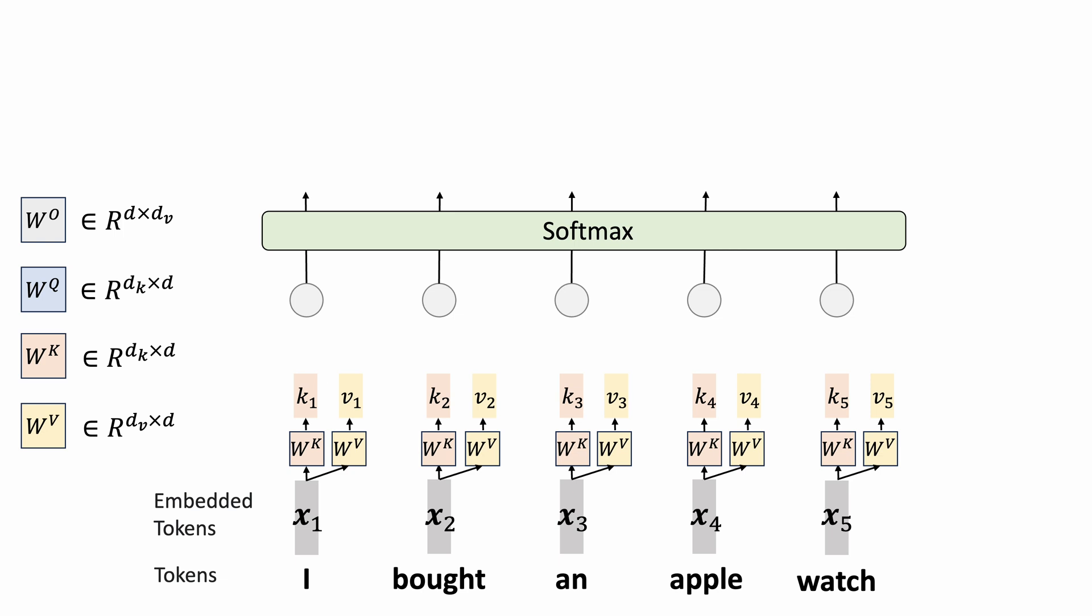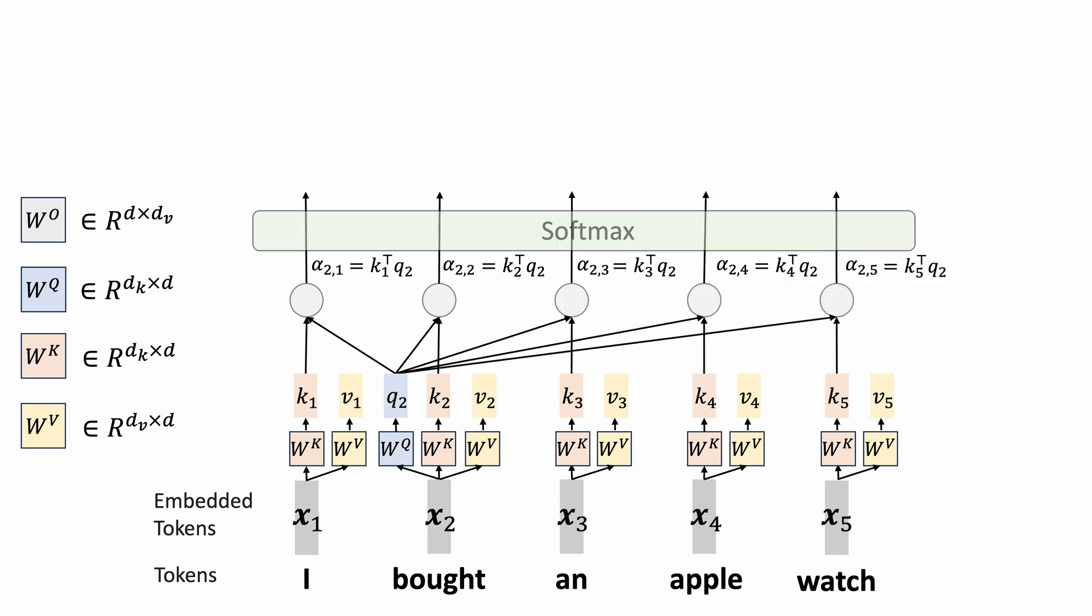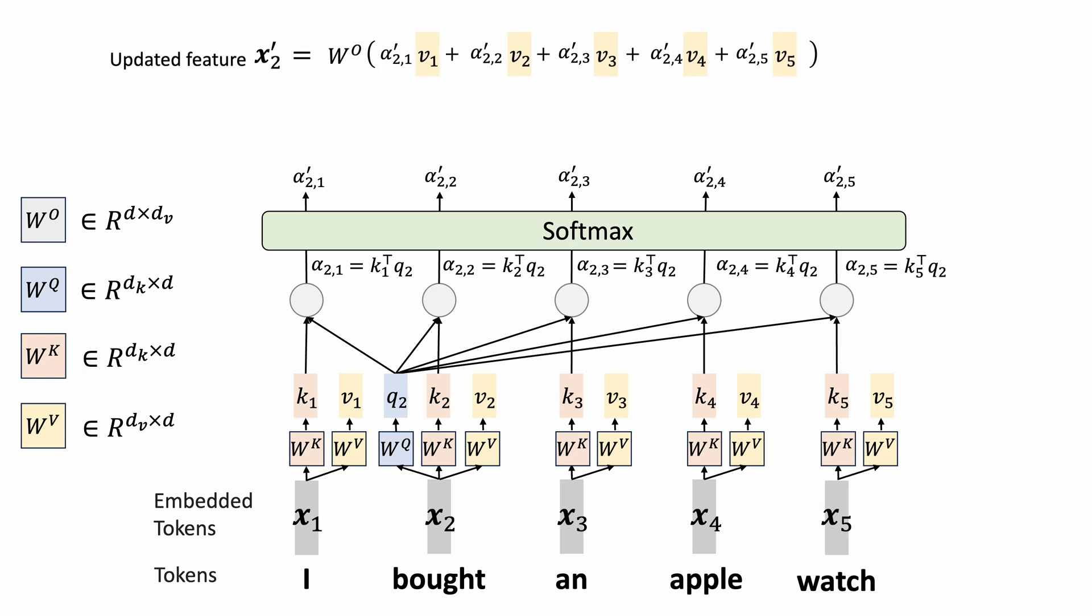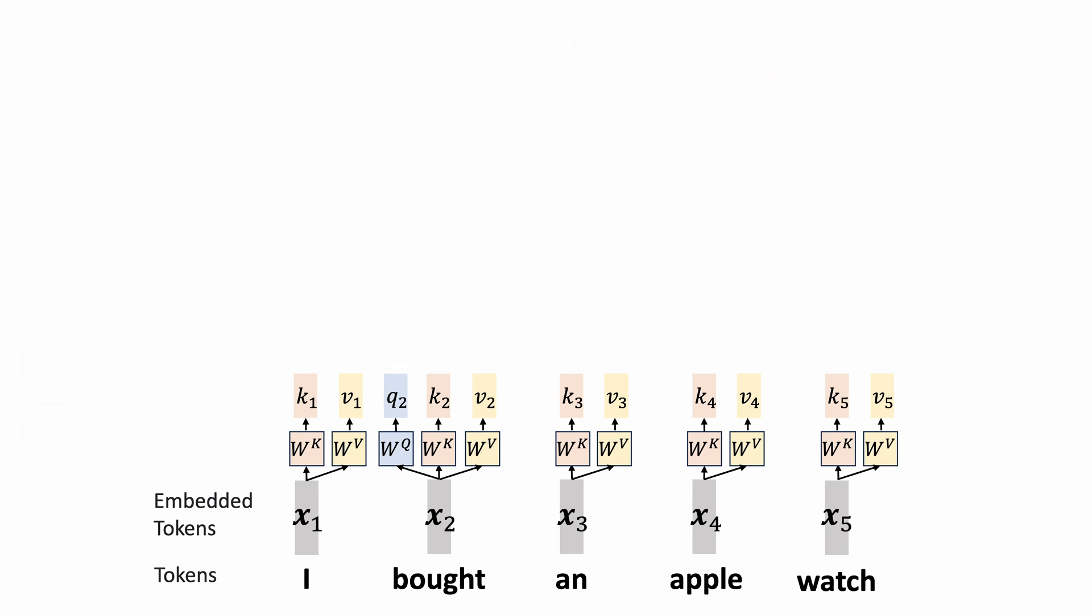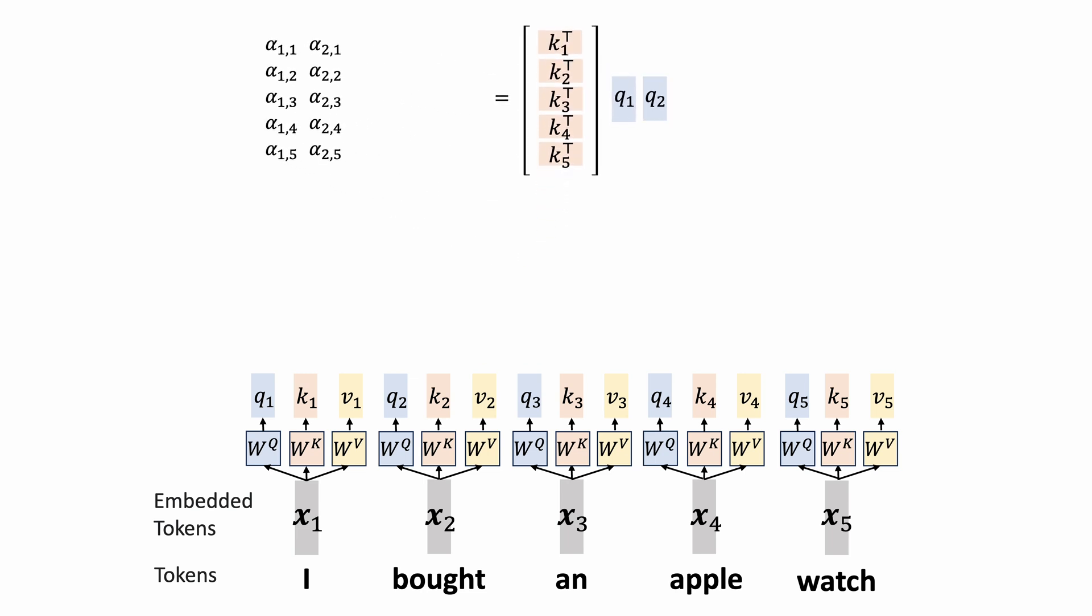Similarly, to extract the context for the token bought, we first compute the query vector q2, the vector dot products with all the key vectors, and get the updated features using a weighted sum of the value vectors. Let's organize these computations. Here we have the vector dot products between the first query vector q1 and all the key vectors. We can write this more compactly by stacking the key vectors into a matrix, and stacking the query vectors along the columns.